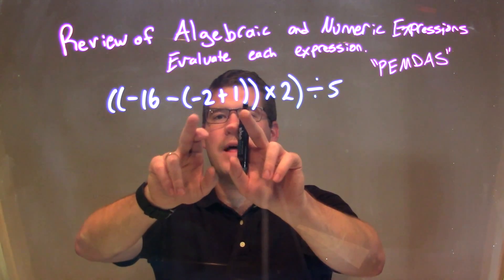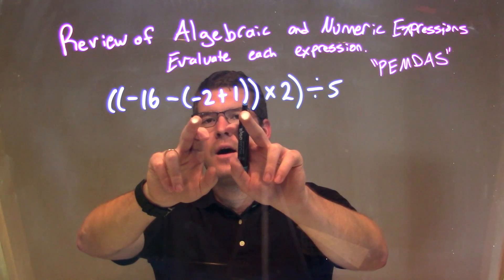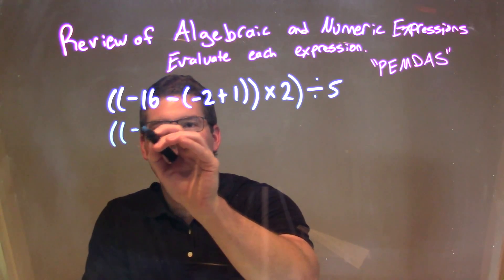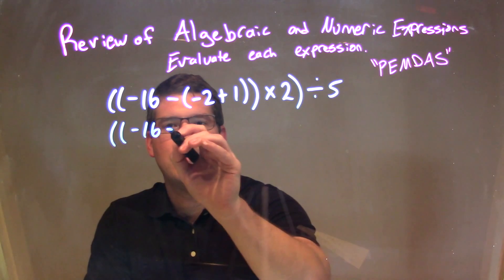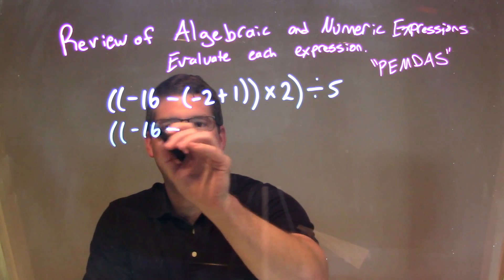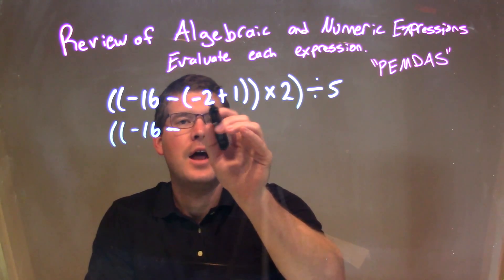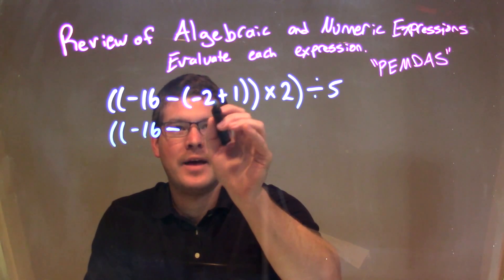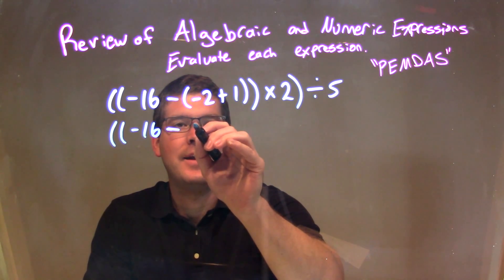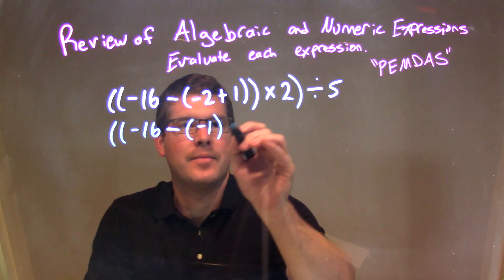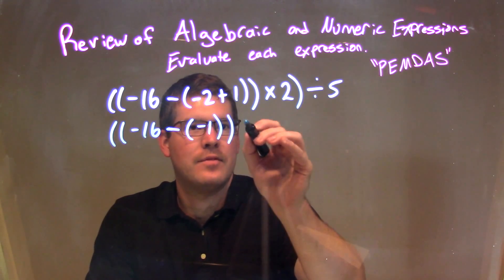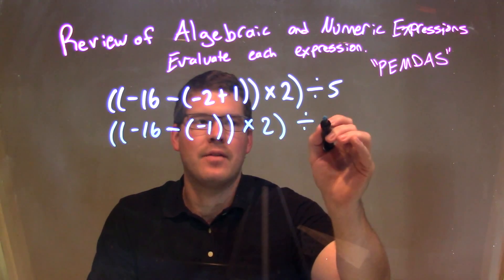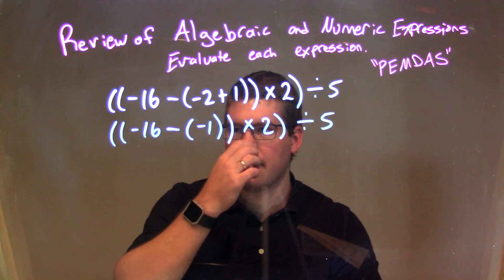We look at the most inside one — that's that negative 2 plus 1. I'm going to rewrite everything, so take your time with this. Double parentheses, negative 16, subtracted by, and then negative 2 plus 1 — I'm going to simplify inside that parentheses — that's a negative 1. Then bring this parentheses down, times 2. Make sure you bring everything down.